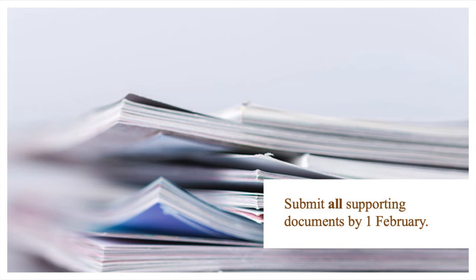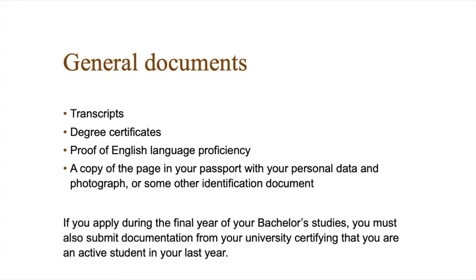There are two sets of documents you have to consider when applying for studies at Lund University. First, you have to submit all general documents required by university admissions in Sweden. These include transcripts of completed courses and grades for each semester included in your degree, and your degree certificate. Check the country-specific rules for the country in which you completed your bachelor's studies, as there may be additional rules on how to submit your documents. You must also submit proof that you meet the required level of English — English 6 is required by most programs, but a few programs may require IELTS scores. If you are in the final year of your bachelor's degree when applying, submit your transcripts thus far, including official proof of enrollment showing you are enrolled in the final year of your bachelor's degree program.